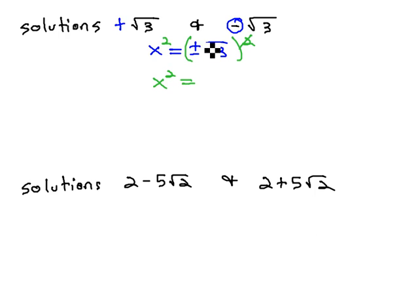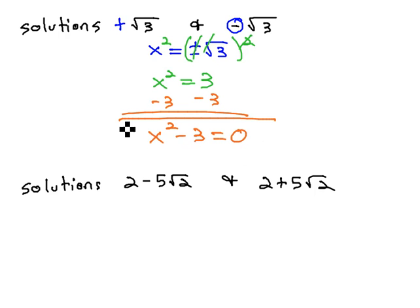When we square a square root, we're just left with 3, and only positive because square takes care of both of those. We like our quadratic to equal 0, so we subtract 3 to get our final equation, x squared minus 3 equals 0, is the equation that would give us the solutions square root of 3 and negative square root of 3.